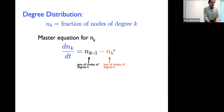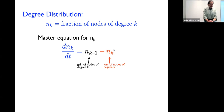This equation is just the equation for a Poisson process. You can solve it one by one recursively — starting with ṅ_1 = −n_1, whose solution is e^{−t} — or using the generating function technique. What comes out is the Poisson degree distribution, one of the main results of the Erdős-Rényi random graph.